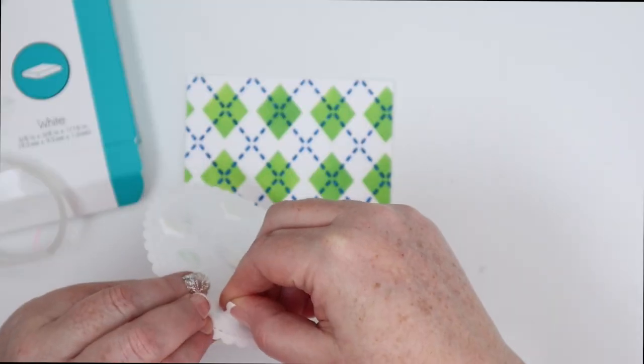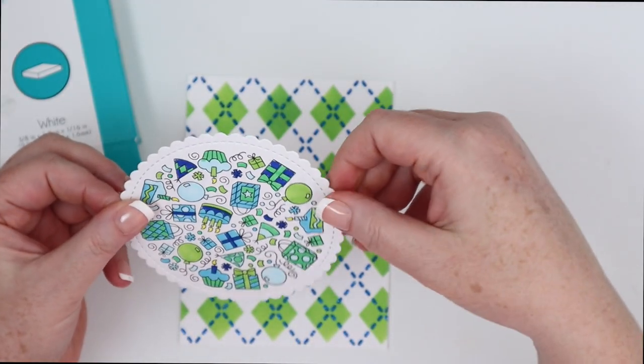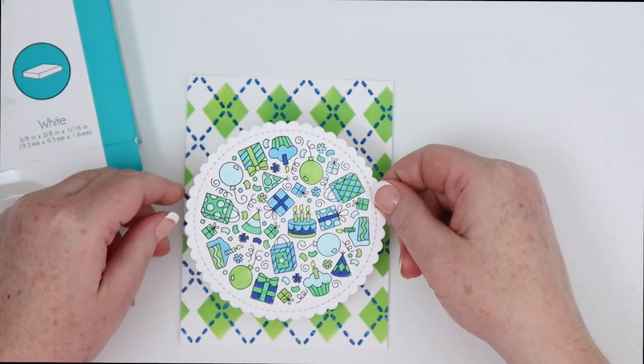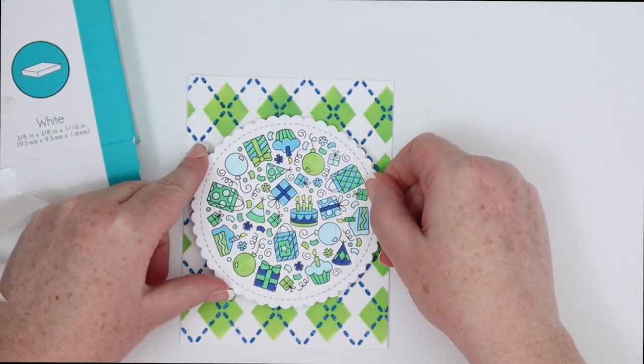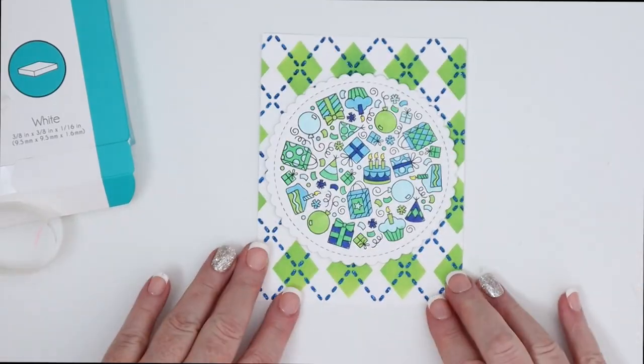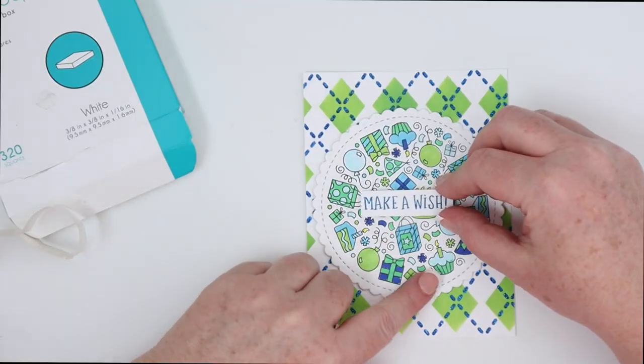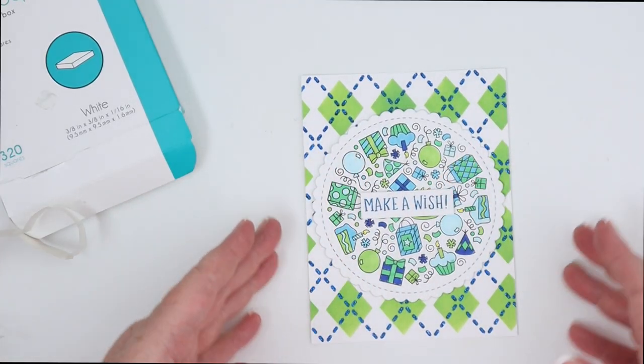And then I am popping the entire circle up this time on some Gina K designs for Thermal Web white foam squares so that I can place them right on the Argyle background and then my sentiment this time is make a wish that I popped up right in the center of that circle.